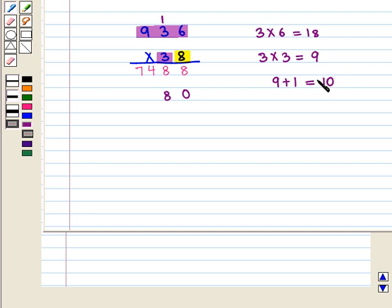So we write 0 here and place 1 above hundreds. Now 3 times 9 is 27, and 27 plus 1 is 28. So we write 28, and we get the number 28080.